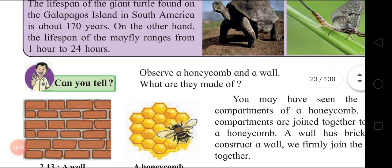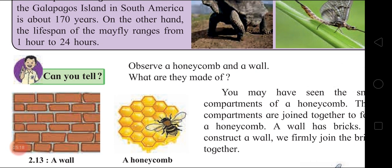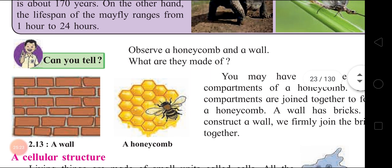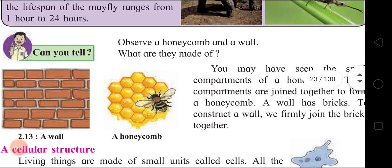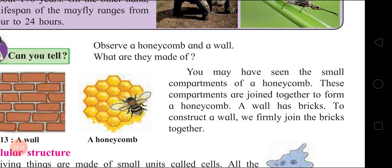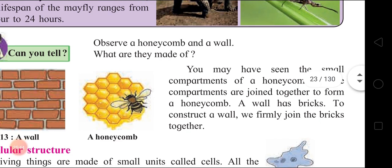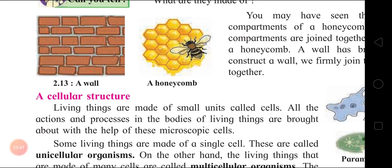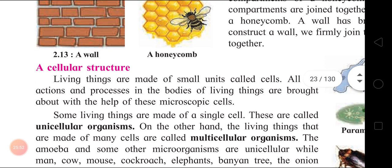Observe a honeycomb and a wall - what are they made of? A wall is made of bricks, and a honeycomb is made of wax. The small compartments of the honeycomb are joined together to form the honeycomb. Similarly, a wall has bricks joined firmly together. In the same way, our body is made of cells. Cellular Structure is also a characteristic of living things.